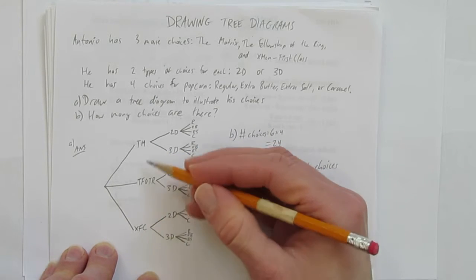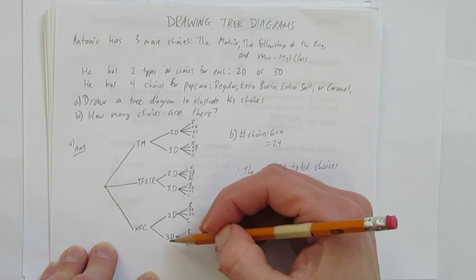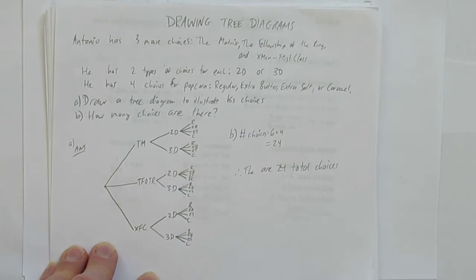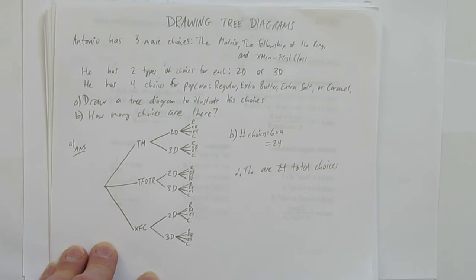And we figured that out by first drawing a tree diagram. Three choices of movie. And for each one of those, two types of possible movie viewing. And for each one of those, four choices for popcorn. So there are 24 different choices that Antonio can make. And we could use this tree diagram to solve a more complicated question of how many of those choices had this kind of popcorn, of how many of them were in 2D. But we're just interested in this video just looking at how to draw a basic tree diagram and count the total number of choices.